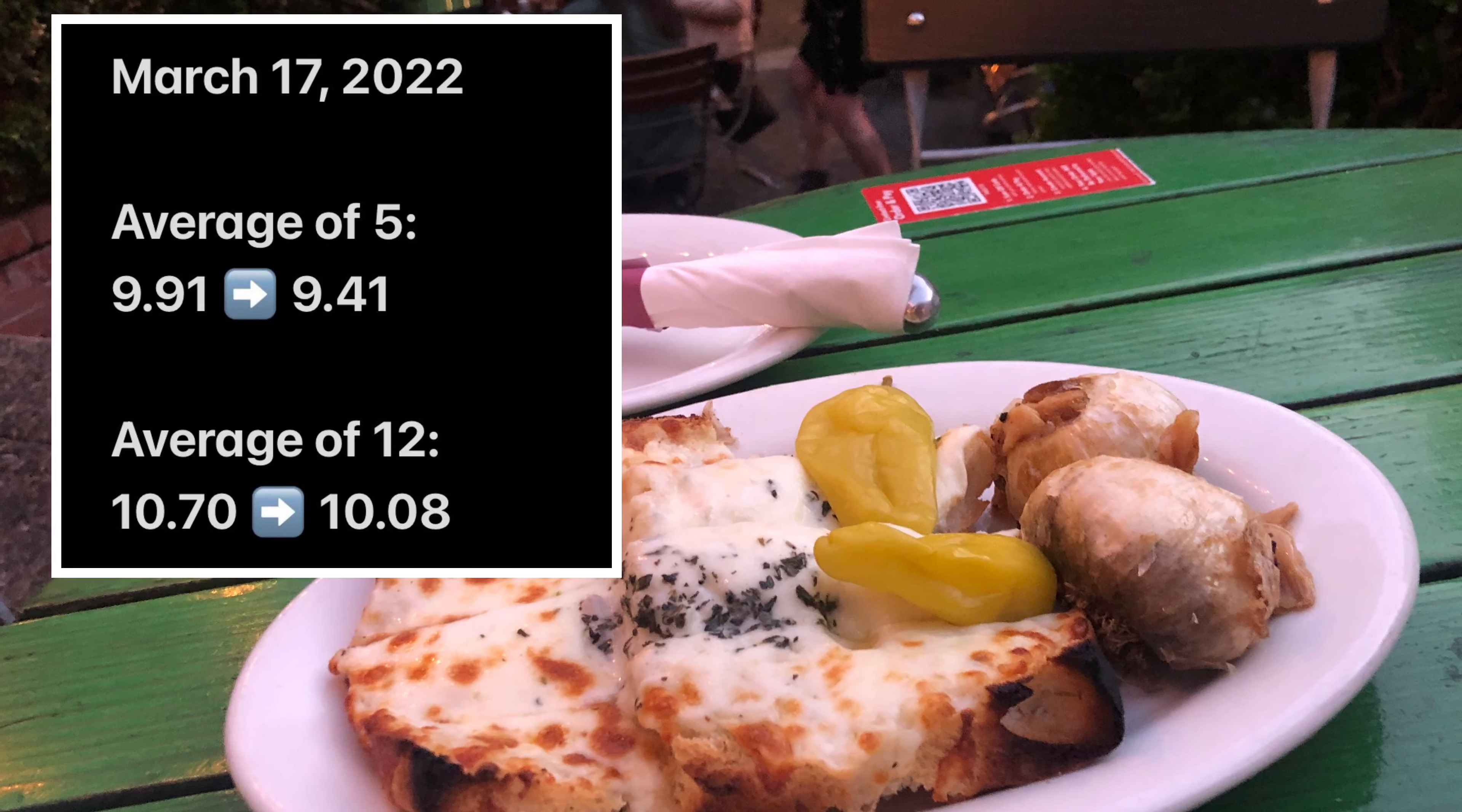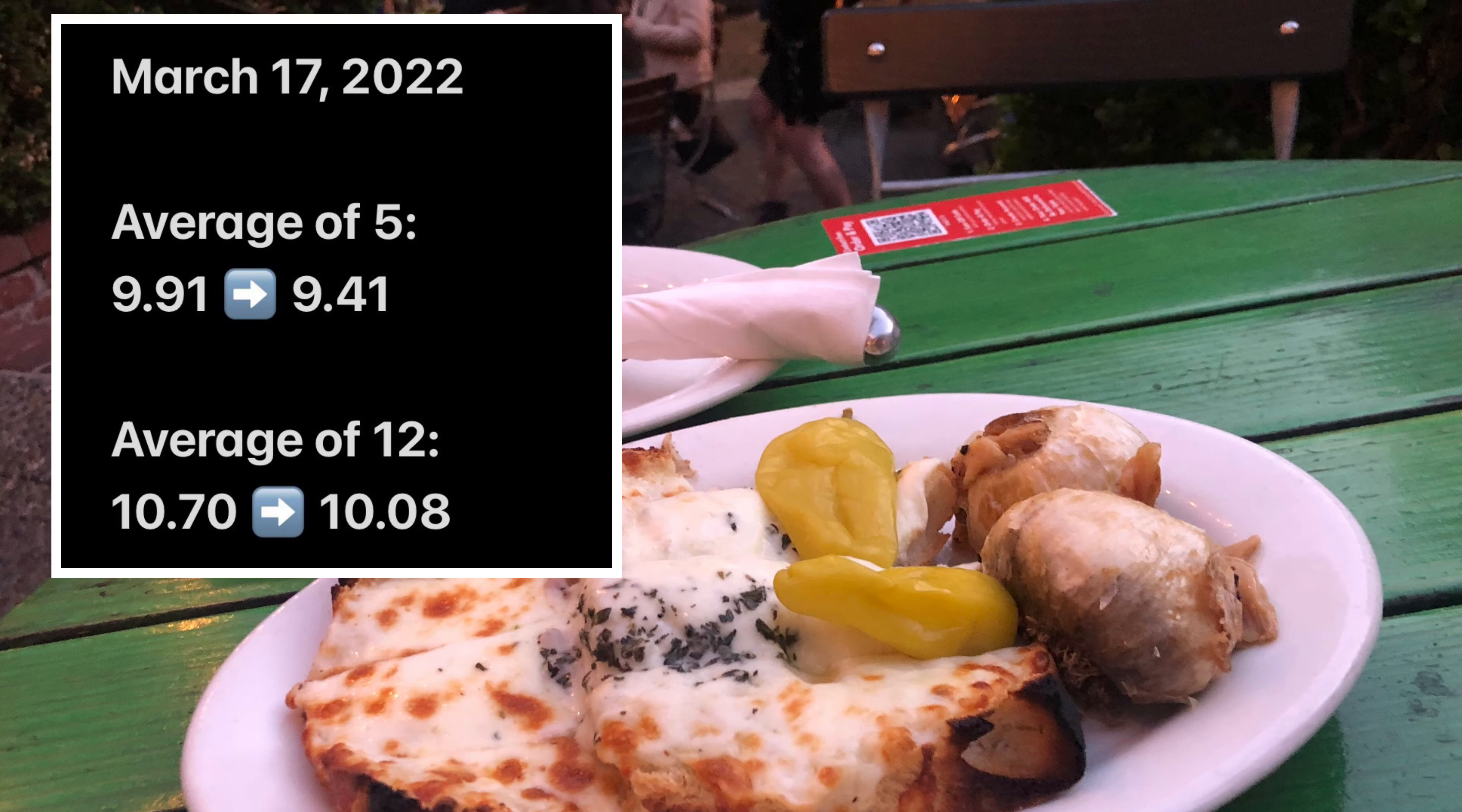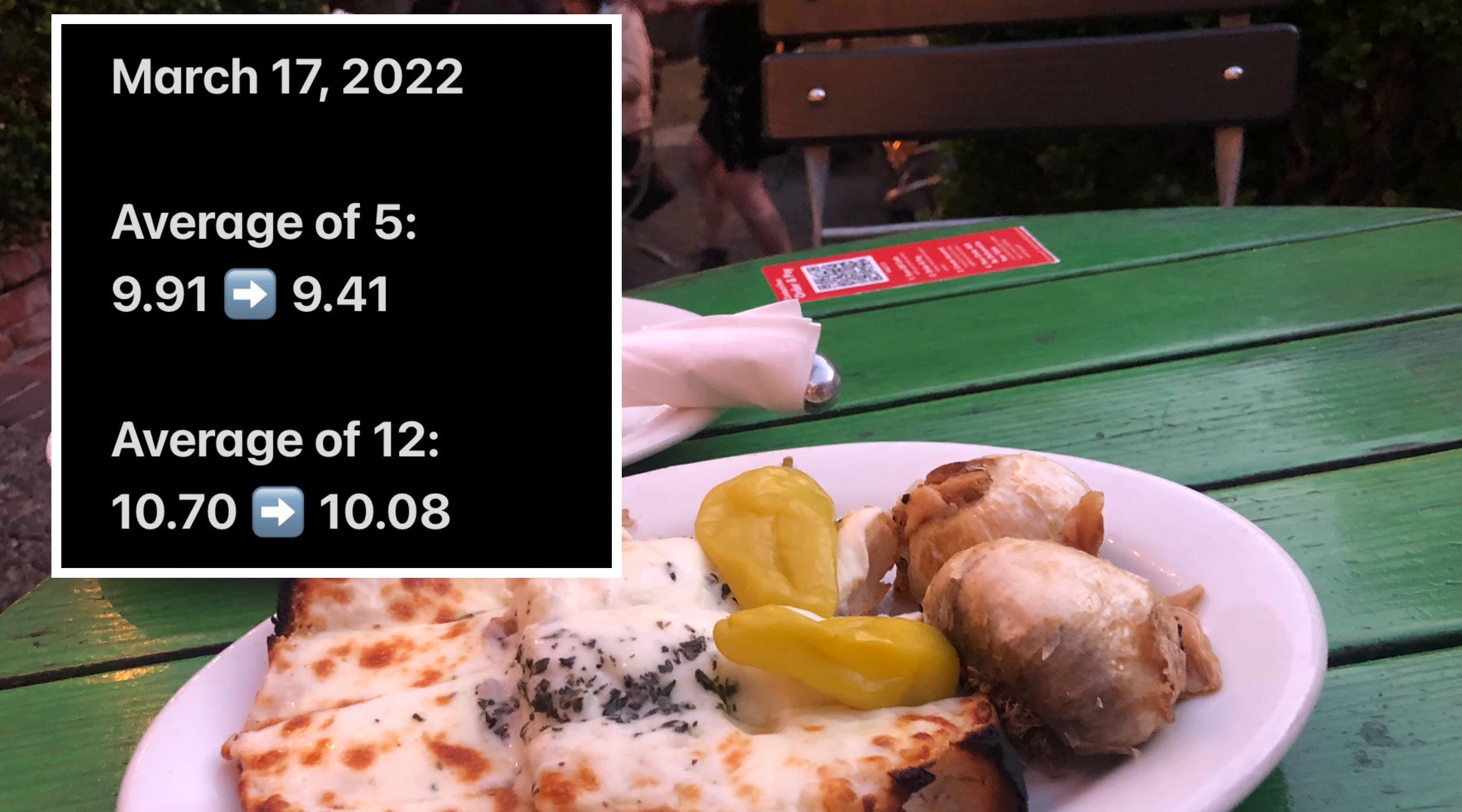Hi guys, ignore the garlic bread in the background. Anyway, a few months ago, I remember I told you guys one of my goals was to get a sub-10 official average in competition, and the news today is just that I broke my PB average of 5 and average of 12 at home, as you can see.